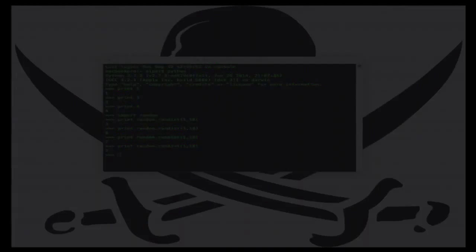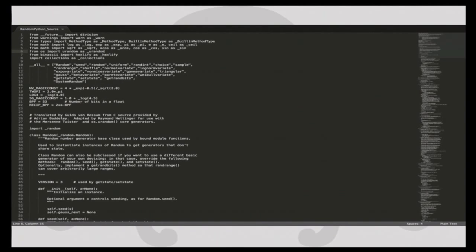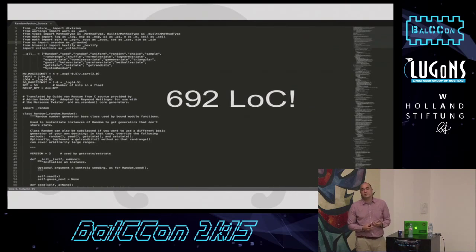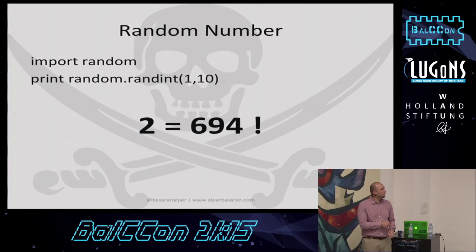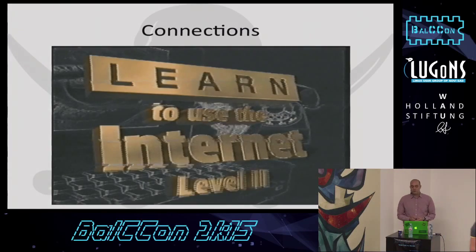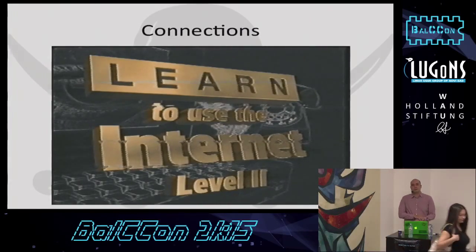Expansion happens easily without you noticing. For example, if I use Python and import the 'random' function — just two lines of code — I've actually included 692 additional lines from the random module that I didn't write, didn't audit, and have no real idea about. So my two-line script is really 694 lines. That's why things get out of hand very quickly.